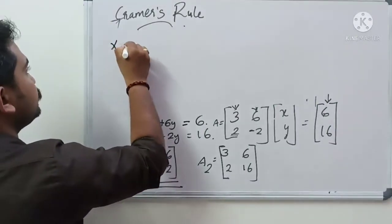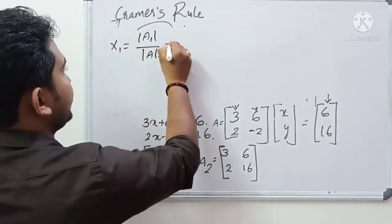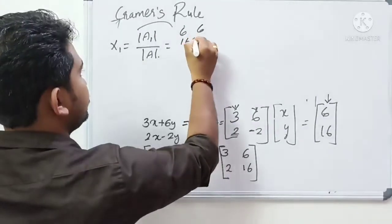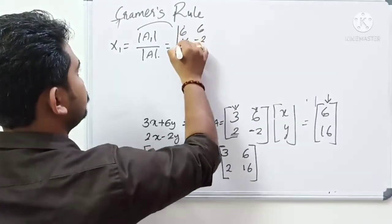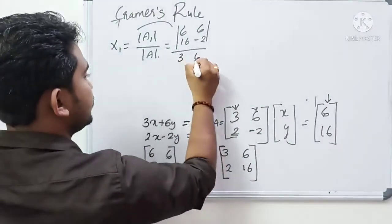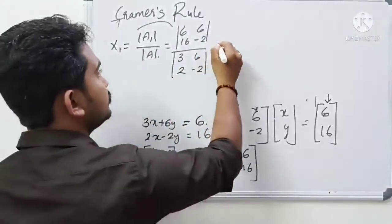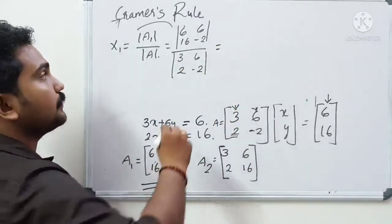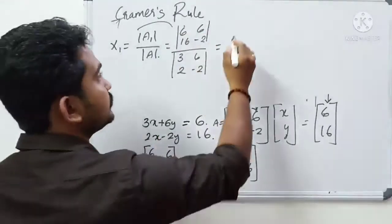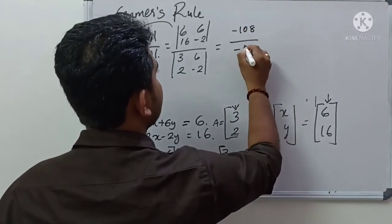x1 is equal to determinant of A1 divided by determinant of A. We have determinant of A1: 6, 6, 16, minus 2 divided by determinant of A: 3, 6, 2, minus 2. This equals: 6 times minus 2 minus 6 times 16, divided by 3 times minus 2 minus 6 times 2, which is minus 8 divided by minus 18.